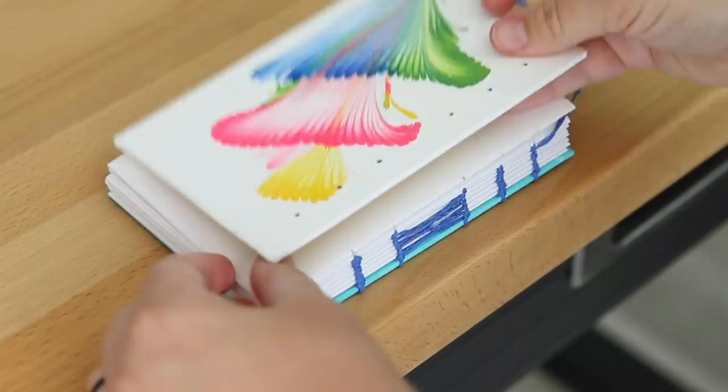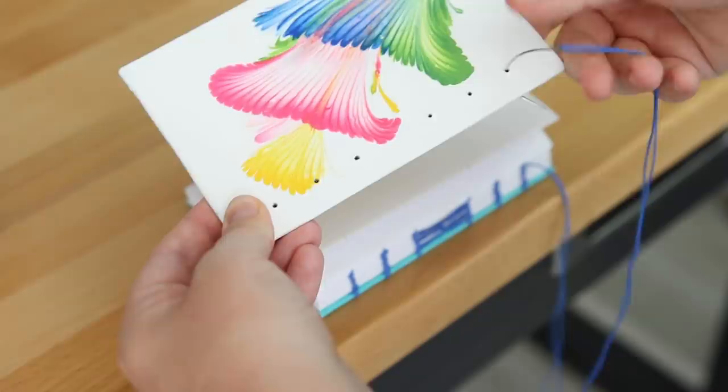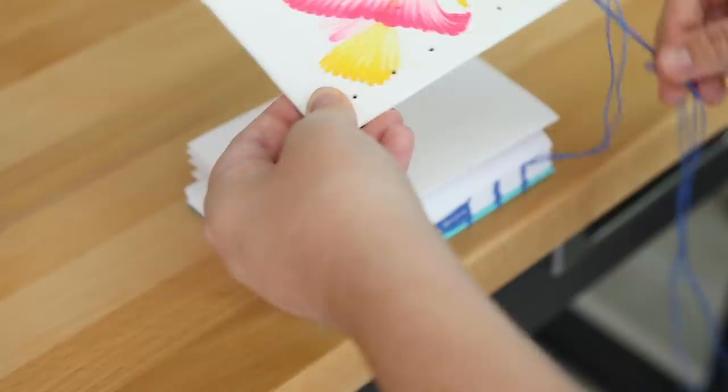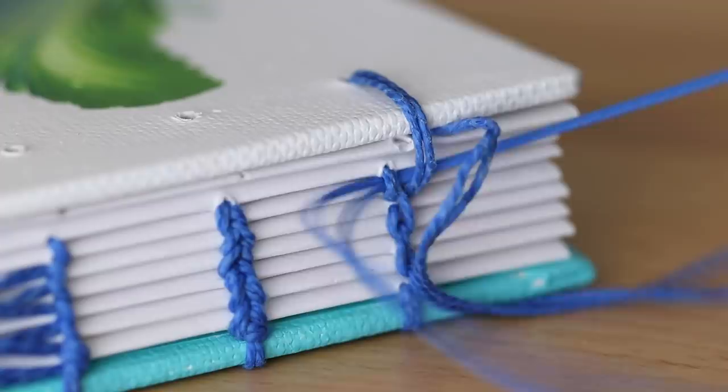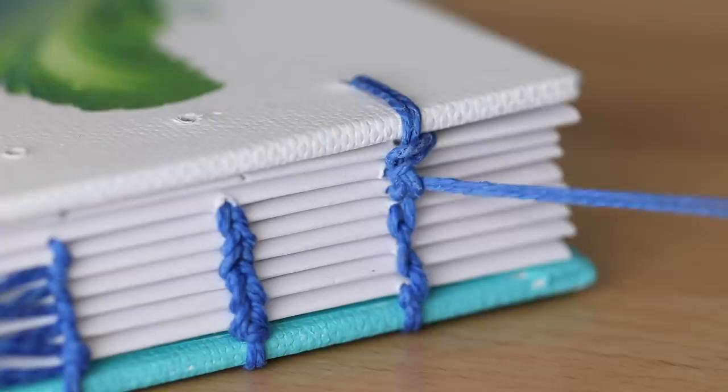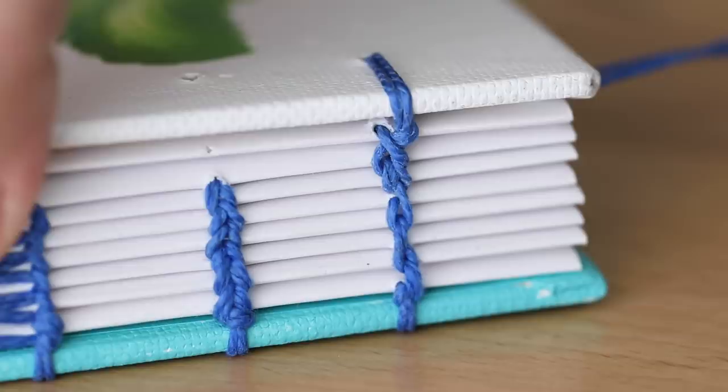When I reach the last signature, I'm going to bind on the cover along with it, just like I do with a usual Coptic stitch. For the first hole on the cover, I'm going to go through the cover first, loop behind the previous stitch, and then into the signature.